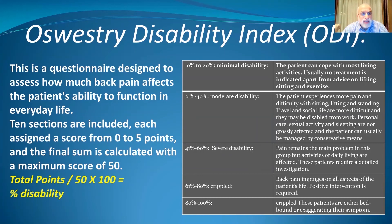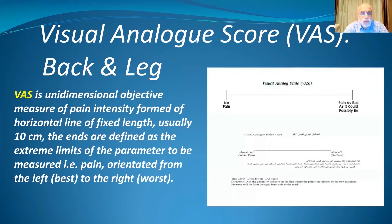The Oswestry Disability Index is a questionnaire designed to assess how much back pain affects the patient's ability to function in everyday life. Ten sections are included, each assigned a score from 0 to 5 points, and the final sum is calculated with a maximum score of 50, then converted to a percentage. The Visual Analog Scale for back and leg pain is a unidimensional objective measure of pain intensity formed by a horizontal line of fixed length, usually 10 cm, oriented from left — representing no pain — to right — representing maximum pain possible.